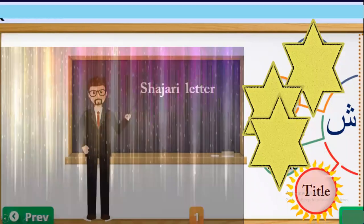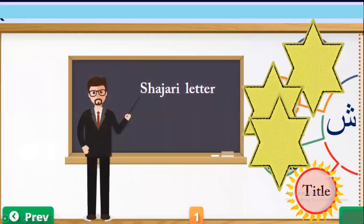Number four: the title of Sheen. The title of Sheen is Shajariya — letter Sheen is called Harfun Shajariya.